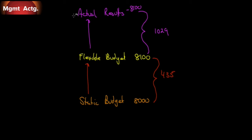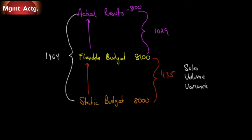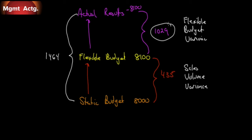The total $1,464 difference decomposes into a sales volume variance of $435 and a flexible budget variance of $1,029. We reward based on the flexible budget variance — the $1,029 — not the complete static-to-actual variance, because the $435 sales volume portion simply happened due to selling 100 more cars. The $1,029 is where the real performance reward lies. That sheds new light on what the comprehensive performance report is actually trying to accomplish.